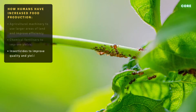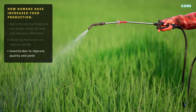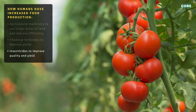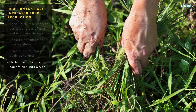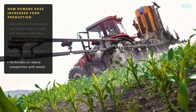Number three, insecticides are used to control and eliminate pests that can damage crops and reduce yields. Targeting harmful insects like aphids and caterpillars helps to maintain crop quality, prevent losses due to pest damage and improve overall yield and profitability. Number four, herbicides are chemical substances used to control or eliminate weeds. Weeds compete with crops for water, nutrients and sunlight, affecting their growth and reducing yields.